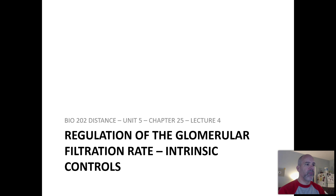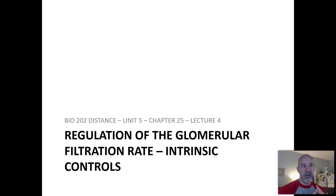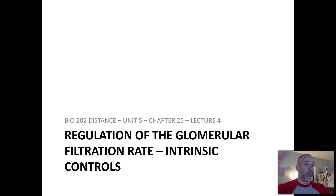We've now covered the three processes of urine formation. The glomerular filtration rate, or GFR, is key and must be regulated to ensure wastes are removed and substances are reclaimed as needed — and GFR also plays an important role in blood pressure control. There are intrinsic controls of GFR, meaning things the kidneys do automatically, and extrinsic controls — influences from outside, like the nervous system. We'll cover those in the next two video lectures.